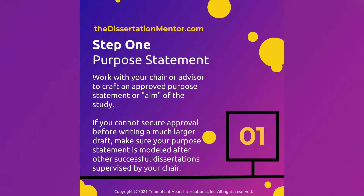The first step in creating perfect alignment in your chapter one is by creating a foolproof purpose statement. You're going to work with your chair or advisor to craft an approved purpose statement or aim of your study. If you cannot secure approval before writing a much larger draft, make sure that your purpose statement is modeled after other successful dissertations supervised by your chair. Nearly every university has a dissertation repository where they hold all the copies of their dissertations that have been written in the past.